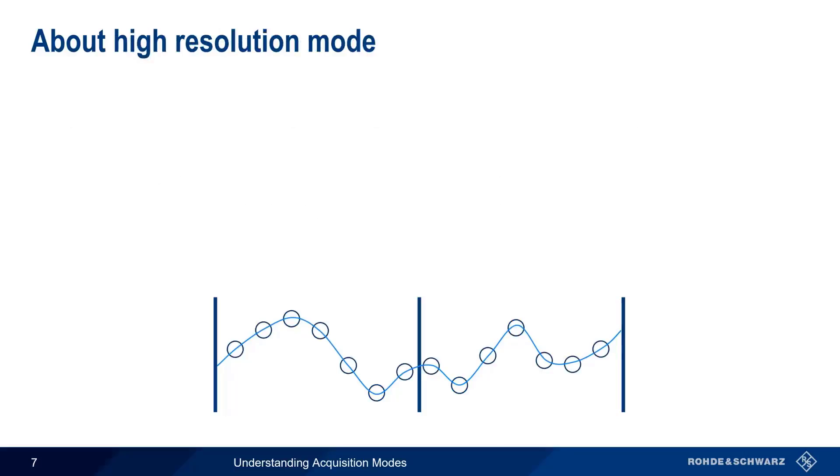The third acquisition mode we'll look at is something called high-resolution mode. Rather than pick one or two values from each interval and discard the other samples, high-resolution mode calculates the average of all the samples within each interval.